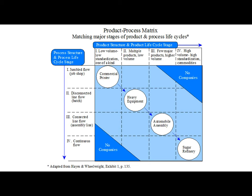This figure is adopted from Hayes and Wheelwright. On the x-axis, we can see product structure and product lifecycle stages. On the y-axis, we can see process structure and process lifecycle stages. In the middle, there are examples of industries. The first example is a commercial printer — low volume, low standardization, one of a kind — and the recommended operation process is a job shop or jumbled flow.